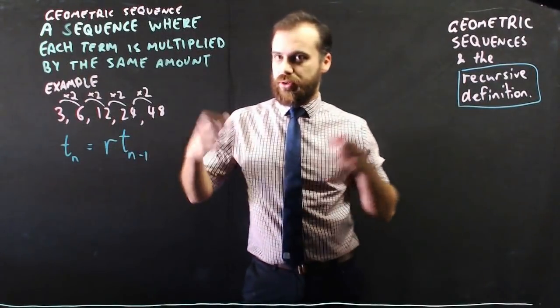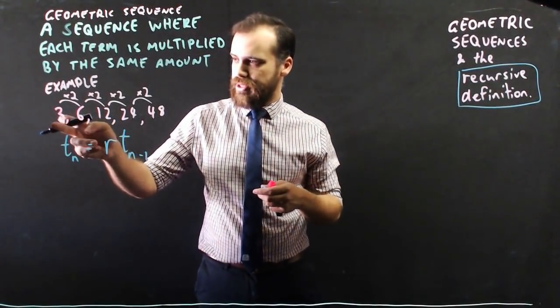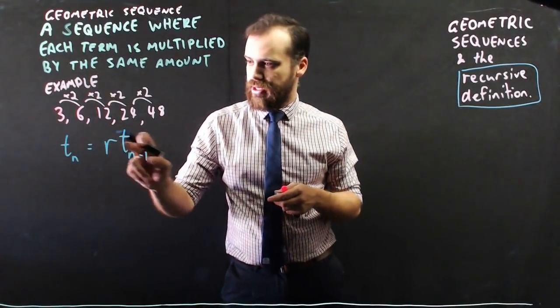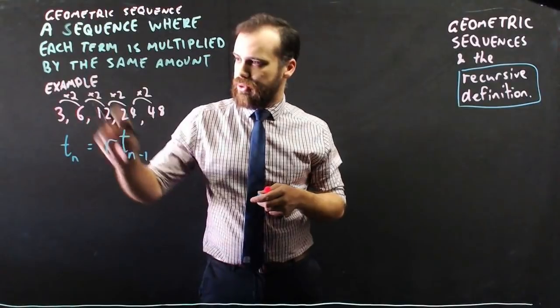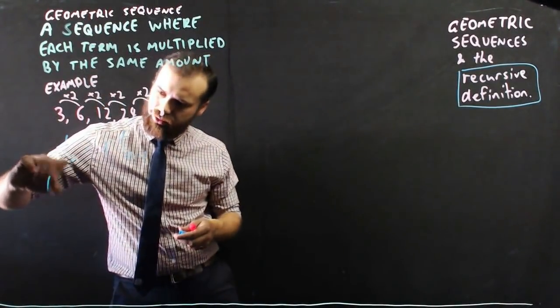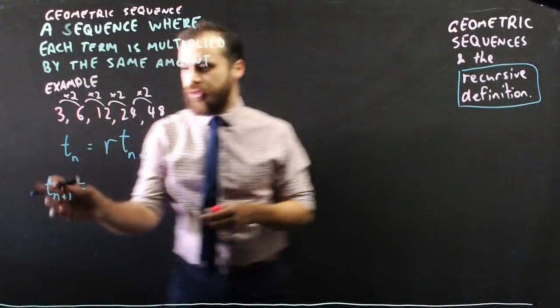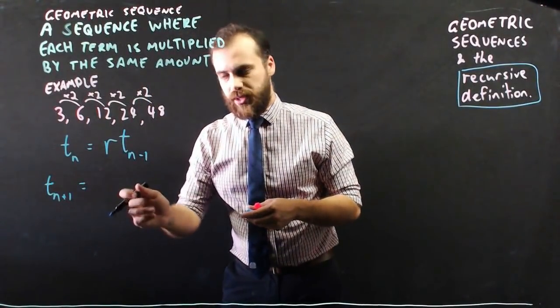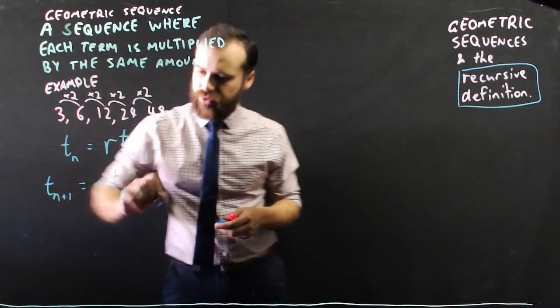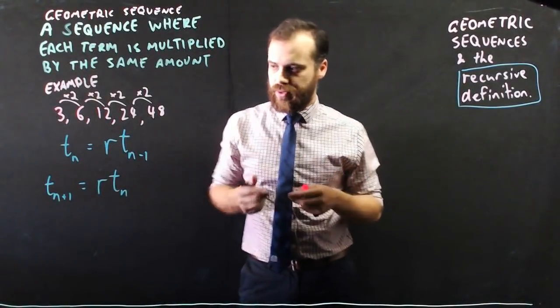So if I want to know what the second term is, as long as I know what the first term is, I can put the first term in here and multiply it by r, which is 2. Another way to write that formula just so we cover all our bases is the next term, term n plus 1, is equal to r times the current term.